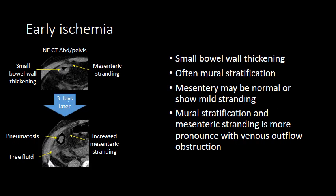In early small bowel ischemia, we often initially see small bowel wall thickening with a mural stratification appearance, where there is submucosal edema or hypoattenuation of the submucosa with mild hyperemia of the mucosa. The mesentery may be normal in early ischemia but can show mild stranding. The mural stratification and mesenteric stranding will be much more pronounced if the etiology is thrombus within the outflow vessels, such as superior mesenteric vein or portal vein thrombosis.